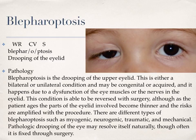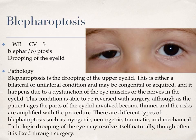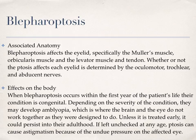Our last condition is blepharoptosis, which means drooping of the eyelid. Blepharoptosis is the drooping of the upper eyelid. This is either a bilateral or unilateral condition and may be congenital or acquired, and it happens due to a dysfunction of the eye muscles or the nerves in the eyelid. This condition can be reversed through surgery, although as the patient ages, parts of the eyelid involved become thinner and the risks are amplified with the procedure. There are different types of blepharoptosis, such as myogenic, neurogenic, traumatic, and mechanical. Blepharoptosis affects the eyelids, specifically the Mueller's muscle, orbicularis muscle, and the levator muscle and tendon. Whether or not the ptosis affects each eyelid is determined by the oculomotor, trochlear, and abducent nerves.